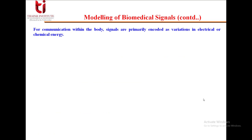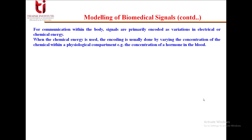For communication within the body, signals are primarily encoded as variations in electrical or chemical energy. When chemical energy is used, the encoding is usually done by varying the concentration of the chemical within a physiological compartment — for example, the concentration of a hormone in the blood.